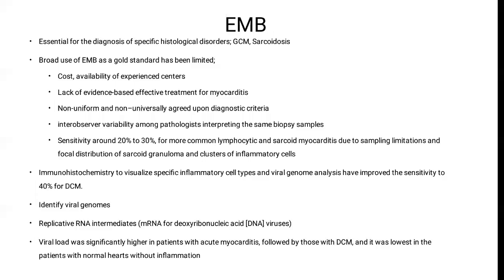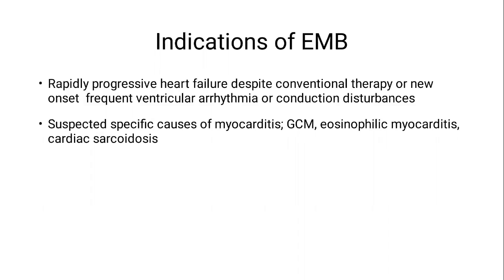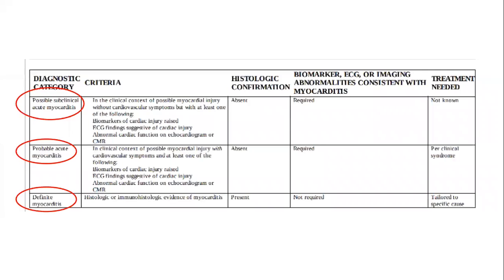Endomyocardial biopsy is indicated in rapidly progressive heart failure despite conventional therapy, or suspected specific causes of myocarditis like giant cell myocarditis, eosinophilic myocarditis, or sarcoidosis. The diagnosis of myocarditis can fall into three categories: definite myocarditis — done by endomyocardial biopsy; probable acute myocarditis — combining symptoms suggestive of myocarditis together with evidence of myocardial damage, either by elevation of myocardial markers or by myocardial imaging like echocardiogram or cardiovascular MRI; and possible subclinical acute myocarditis — no symptoms, but evidence of myocardial damage by elevated markers or positive imaging modality.